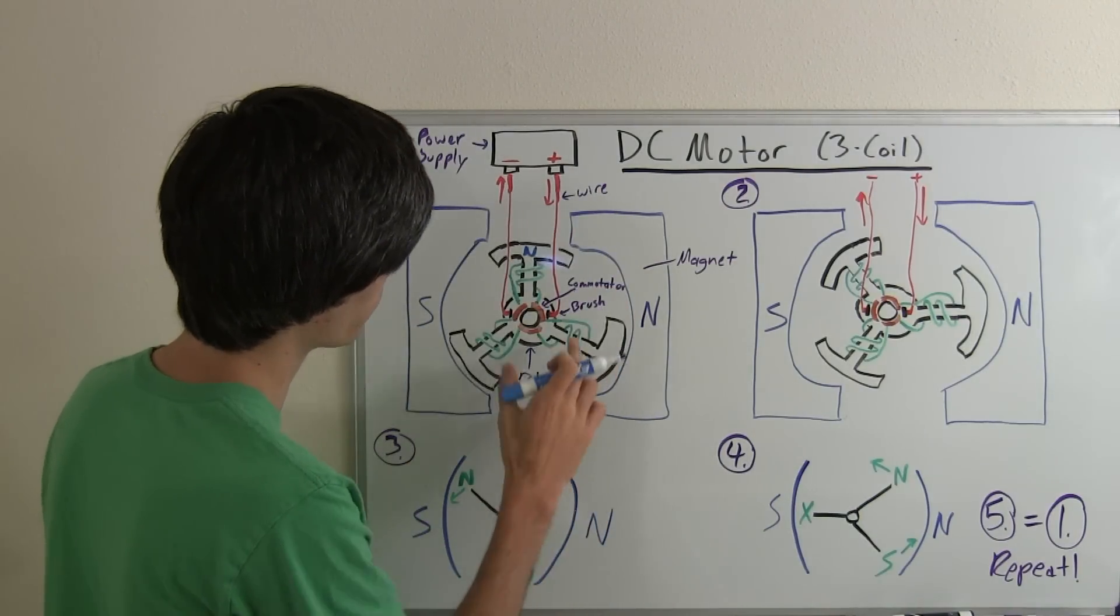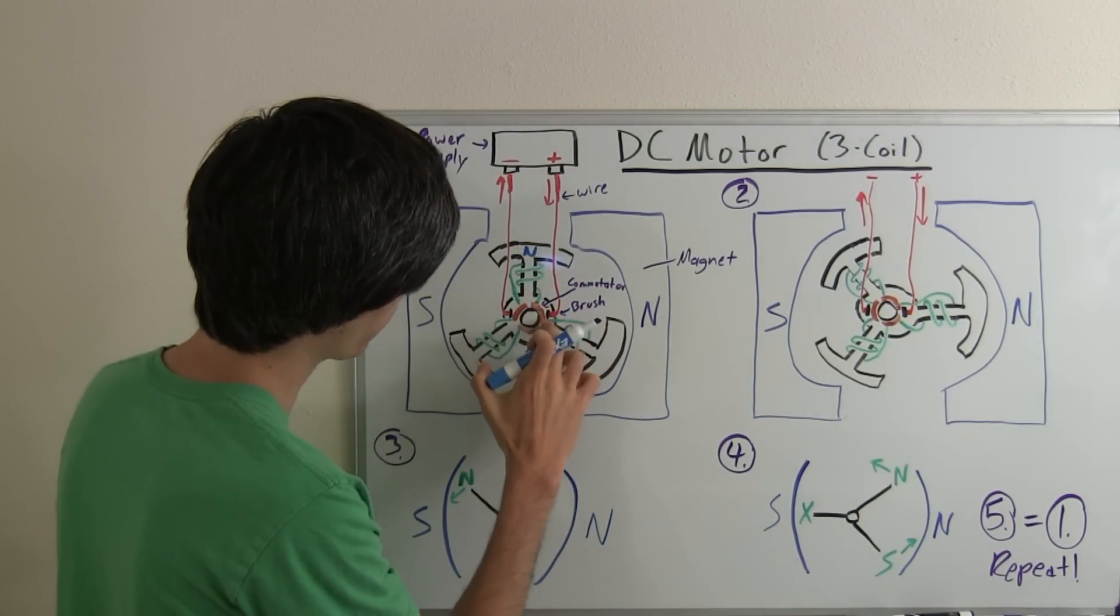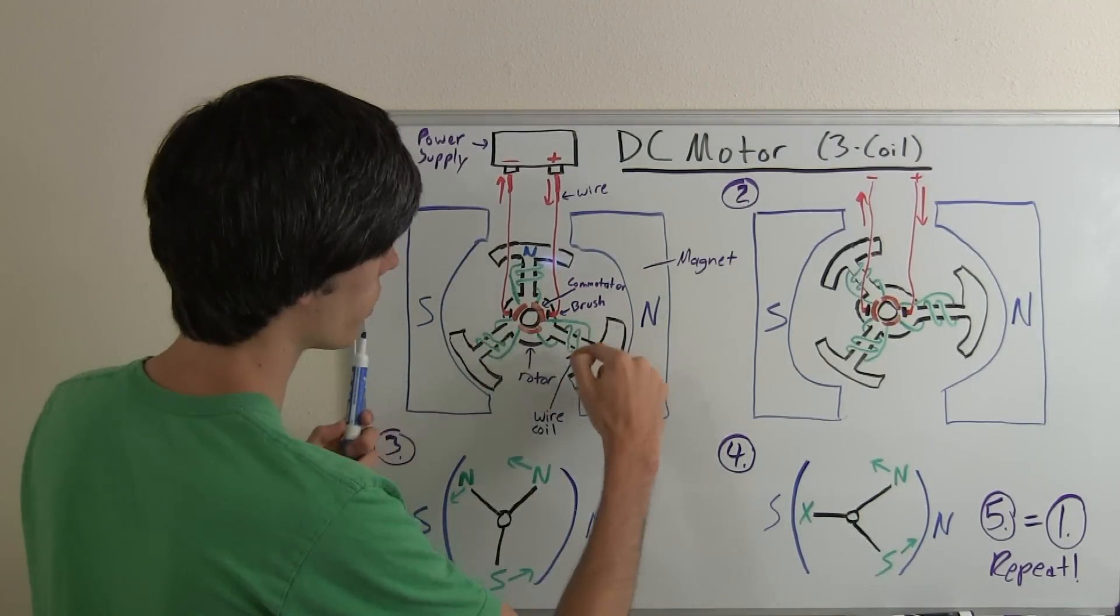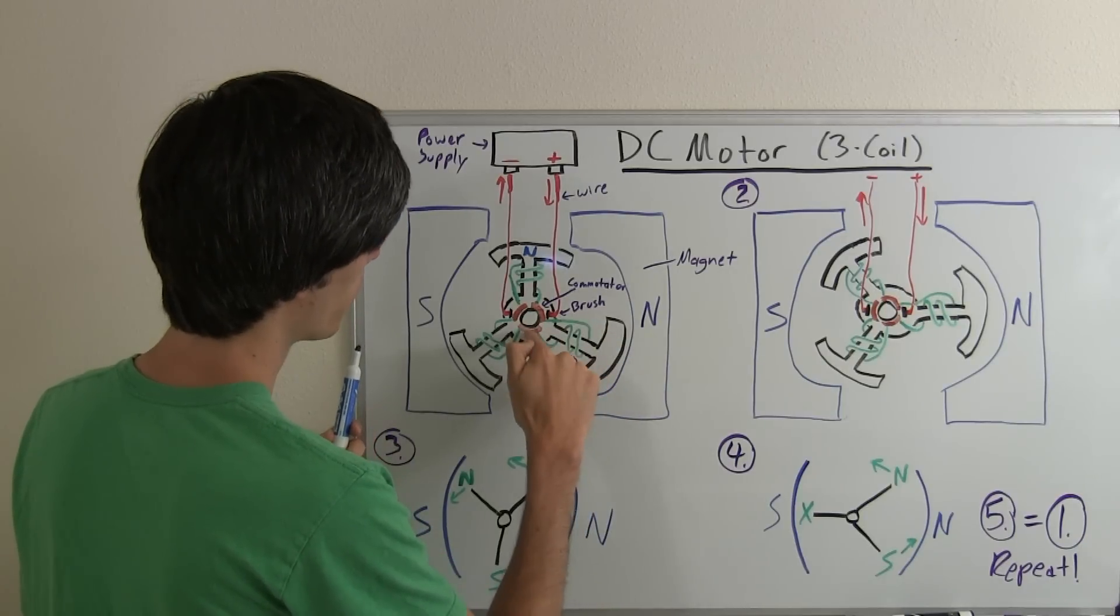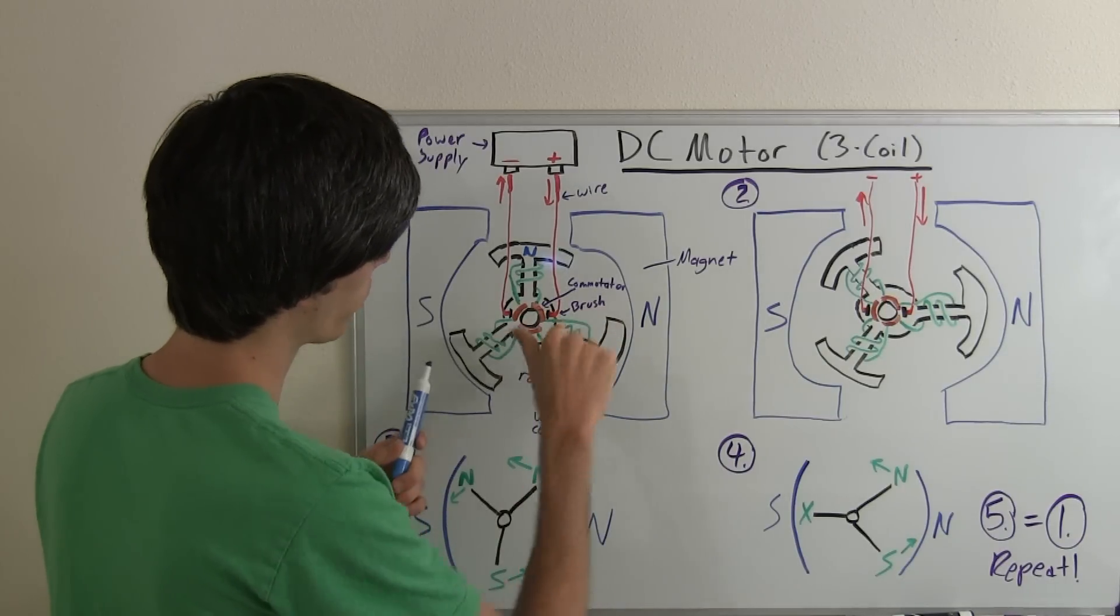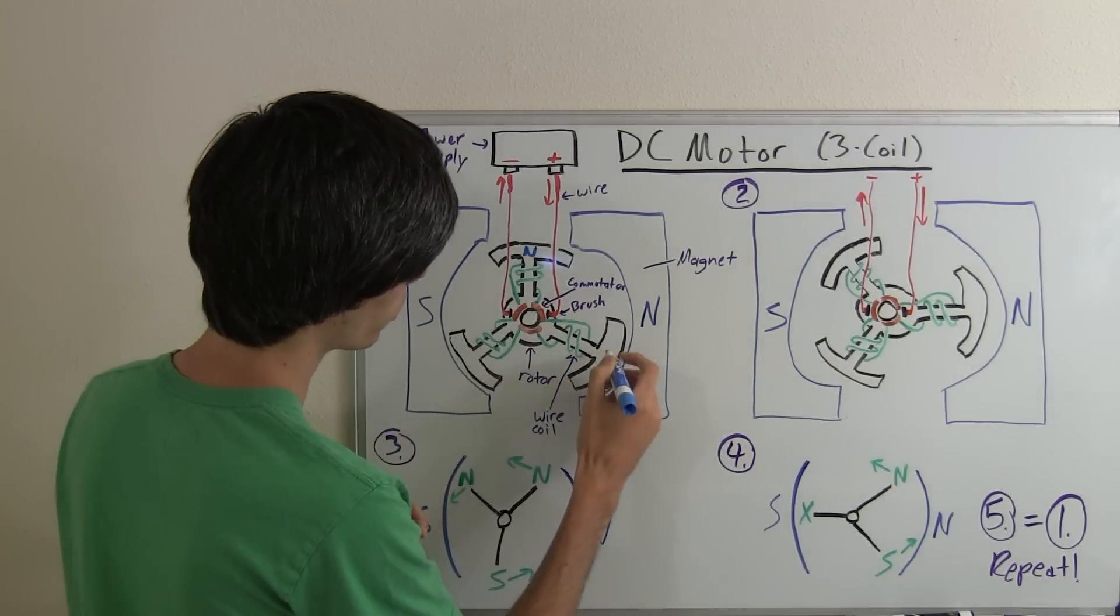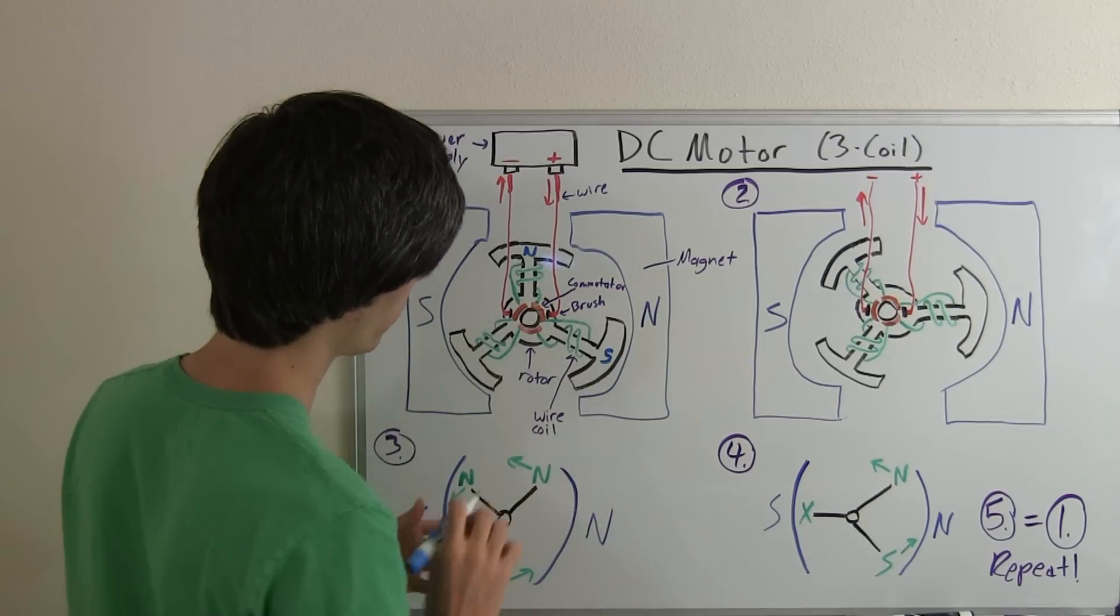Okay the other way that the current can travel is it can travel through here, go up to this motor, it'll travel down the armature to the next commutator and so that will put the north pole over here. So you'll have a south pole created over there.